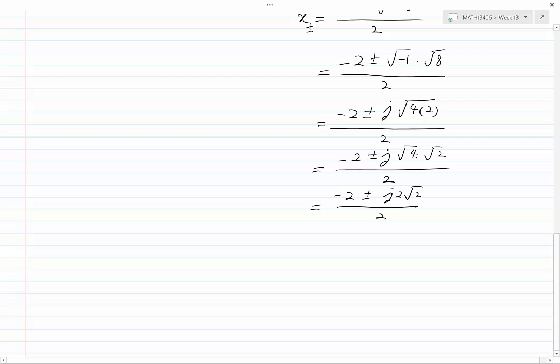I can factor a 2 from the numerator and cancel it with the 2 in the denominator, and I would have minus 1 plus or minus j root 2. These are the other two roots of the polynomial.